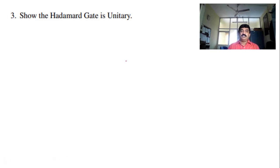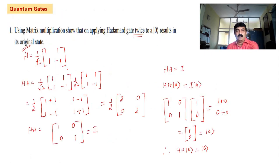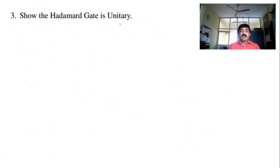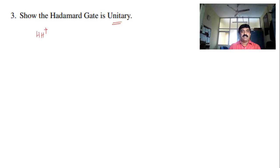Let us move on to the next one: show that the Hadamard gate is unitary. I did a similar problem earlier — there I showed H×H = identity, but here we have to show that H is unitary. A matrix is unitary when it is multiplied with its Hermitian conjugate and the final answer is the identity. That means if H×H† = I, then H is unitary. This is the condition.